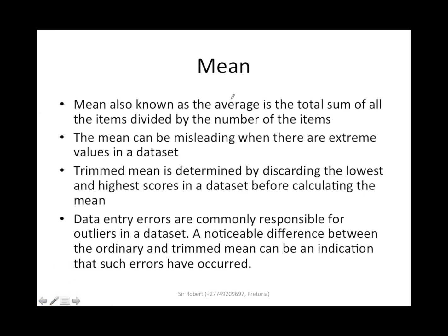For example, let's say we've got 2, 4, 6. The mean of this data set will be x-bar. We add the total sum of the data set divided by the number of items in the data set. So 2 plus 4 plus 6 is 12. 12 divided by the number of items, which is 3. So the answer will be 4.